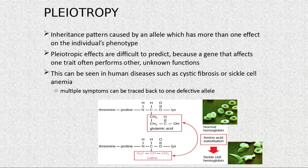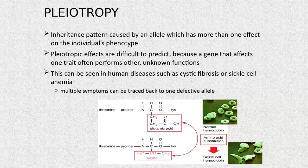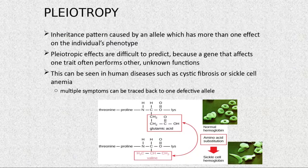This is pleiotropy — it's caused by an allele that has more than one effect on the individual's phenotype. When that one base changes and is transcribed into an amino acid, it gives a different protein — a mutated hemoglobin — causing diseases like cystic fibrosis or sickle cell anemia, affecting lungs, kidneys, and liver.